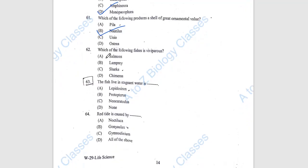Question 62: Which of the following fishes is viviparous? Shark, option C. Throughout the entire gestation cycle, viviparous sharks bear the embryos and give birth to live shark pups. Embryos have a yolk sac placenta attached to their mother, which is how they obtain their nutrients. Question 63: The fish that lives in stagnant water is Lepidoceran, option A.